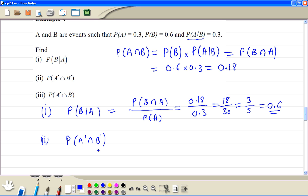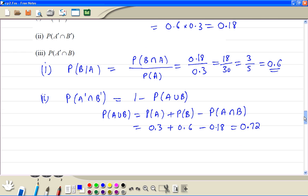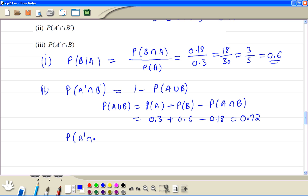Part 2, probability of not A intersection with not B. Now we need to know this: 1 minus probability A union B. Then A union B is equal to the probability of A plus the probability of B minus the probability of A and B. So this is given in the question 0.3, this is 0.6, and this is 0.18.